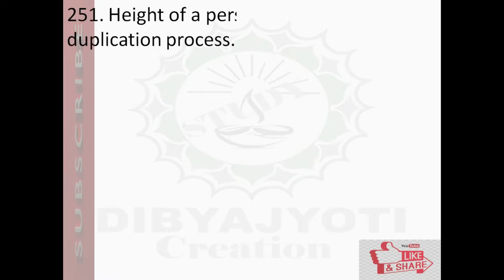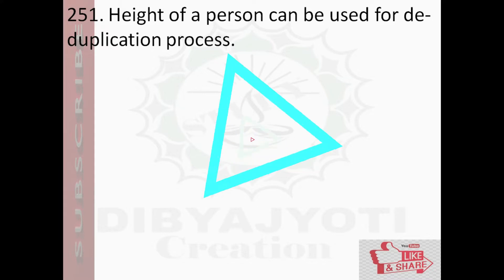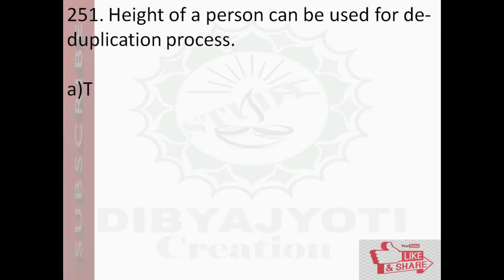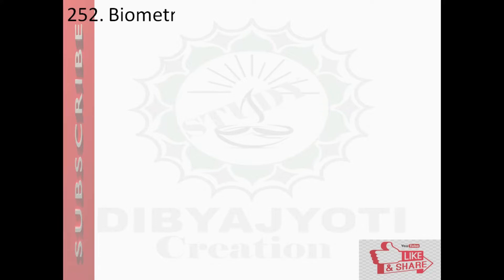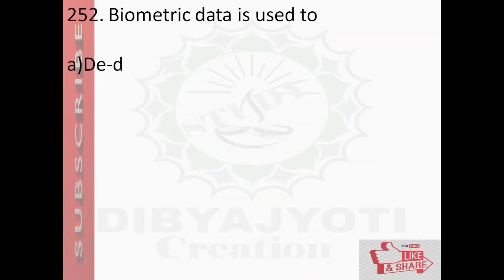Question number 151: Height of a person can be used for the deduplication process. Options are: option A - 2, option B - 1. And the answer is option B - 1.